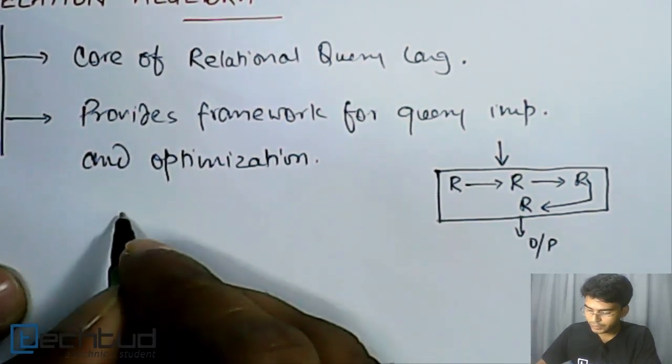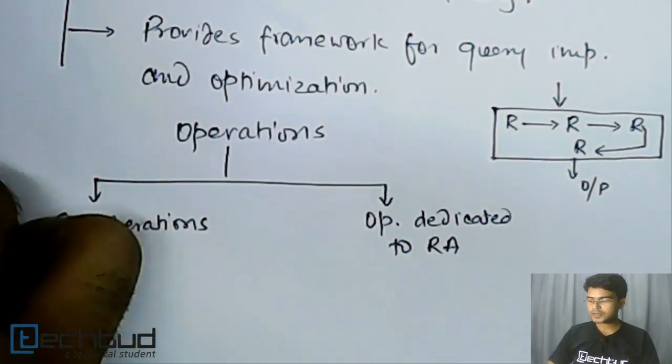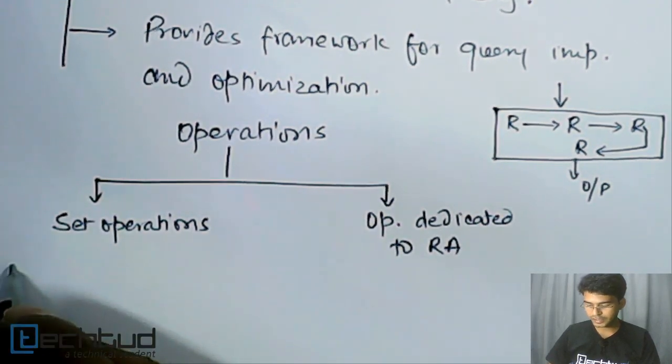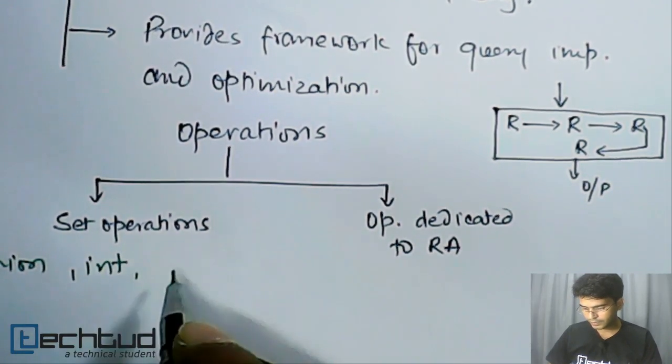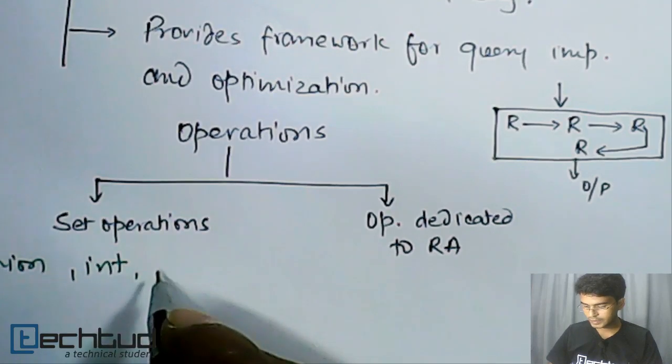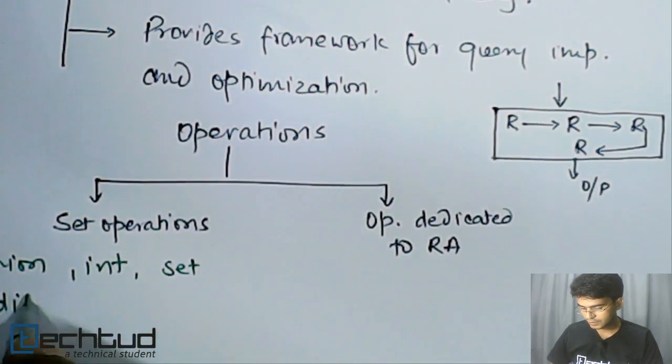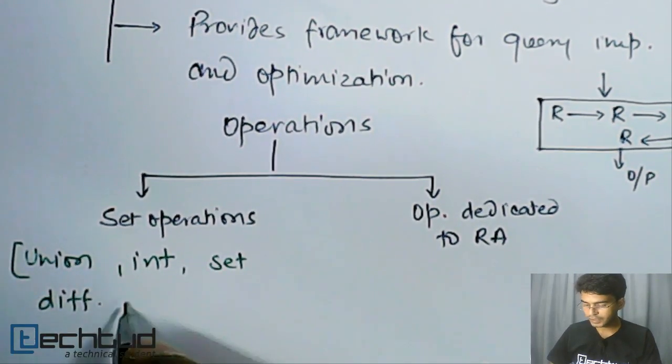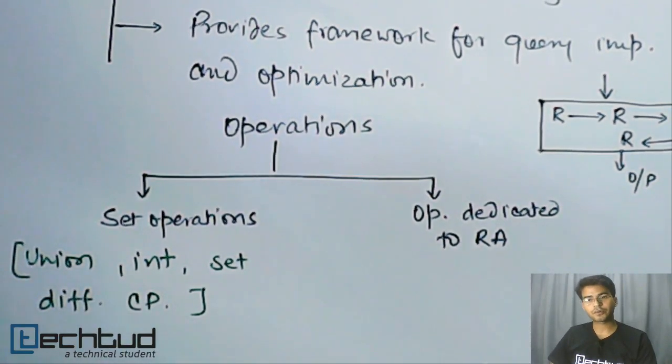So let's write it down. We have two groups of operations. What comes inside this set operations? That is union, intersection, then set differences, and we also have Cartesian product. So these are the operations which are set operations and which work here in case of relational algebra.